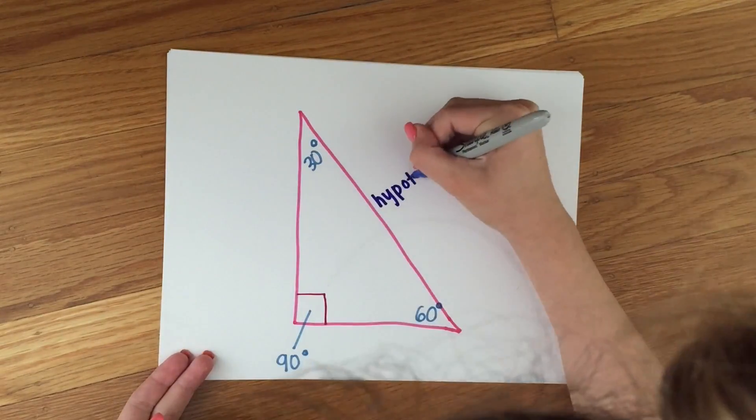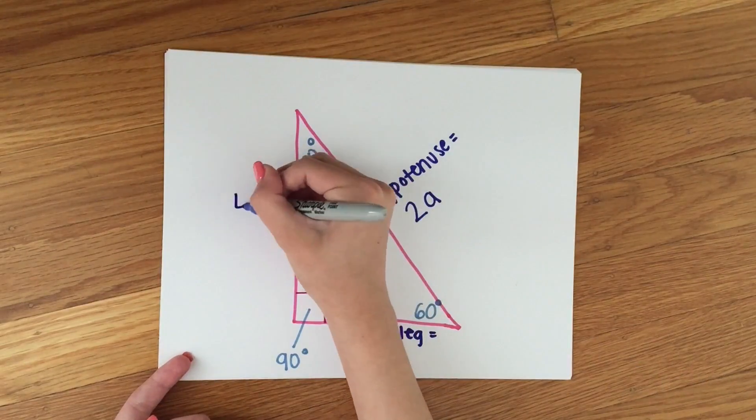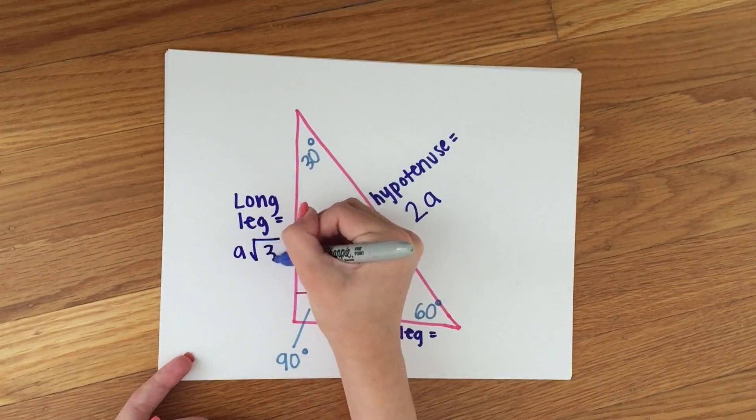The hypotenuse equals 2a, the short leg equals a, and the long leg equals a root 3.